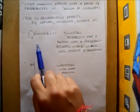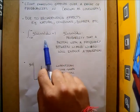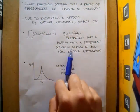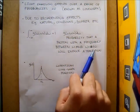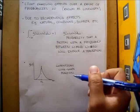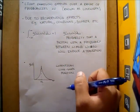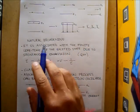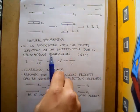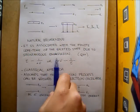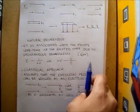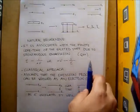The third bullet point covers the probability density function — the probability that a photon with a frequency between omega and omega plus delta omega will induce a transition. It has a line shape function known as the Lorentzian or the Gaussian function. Natural broadening is associated with the finite lifetime of the excited state due to spontaneous emission. This could be explained using quantum mechanics, but I'm going to take a classical approach.